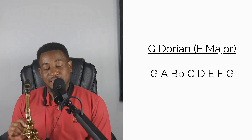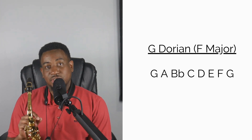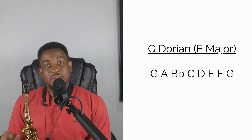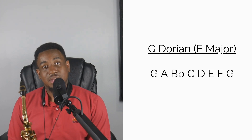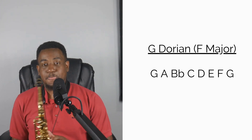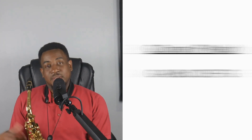Now we have G Dorian. G is the second scale degree of F, so G Dorian will be G A Bb C D E F G — you play all the notes of the F major scale starting from G to G.